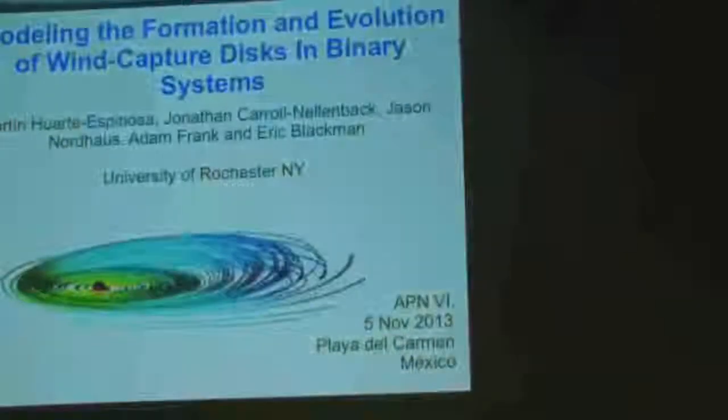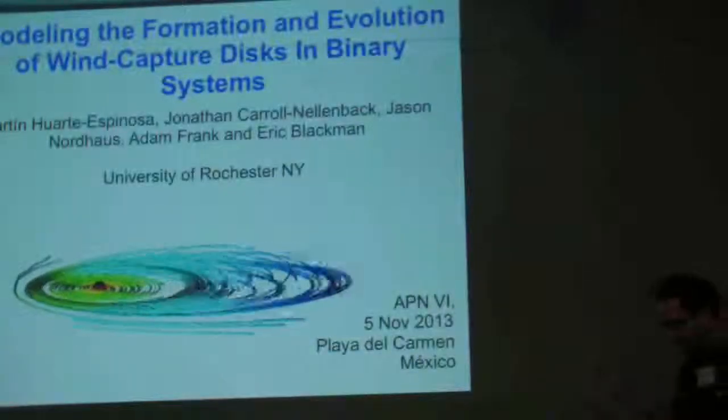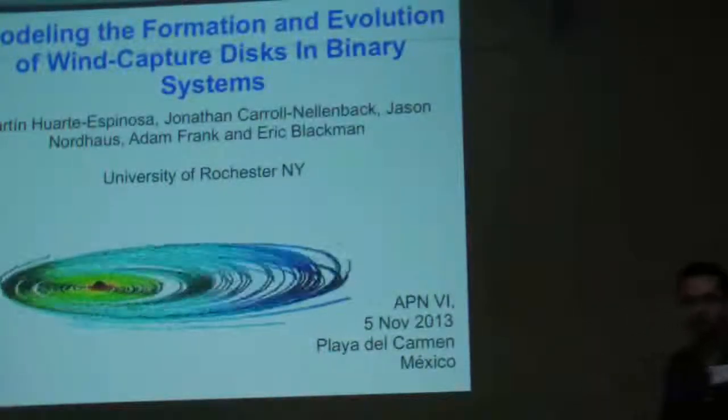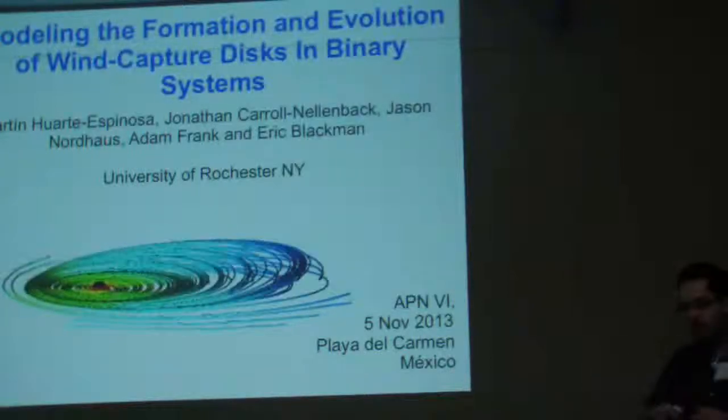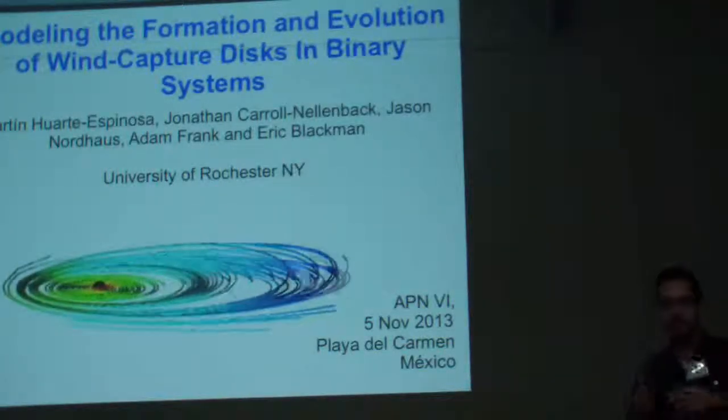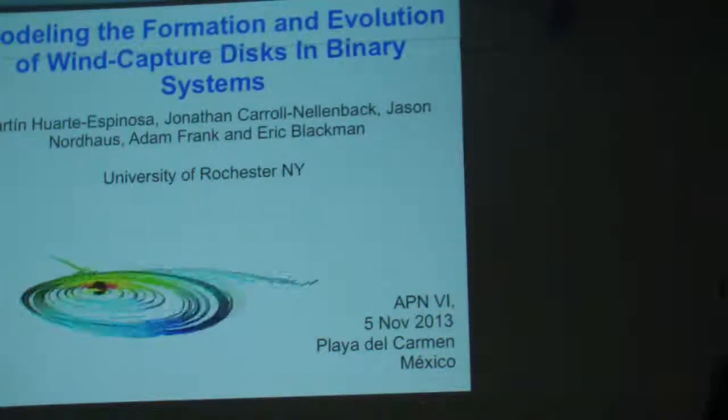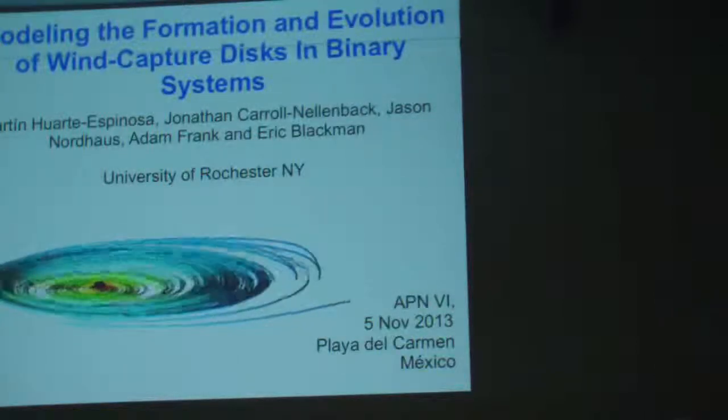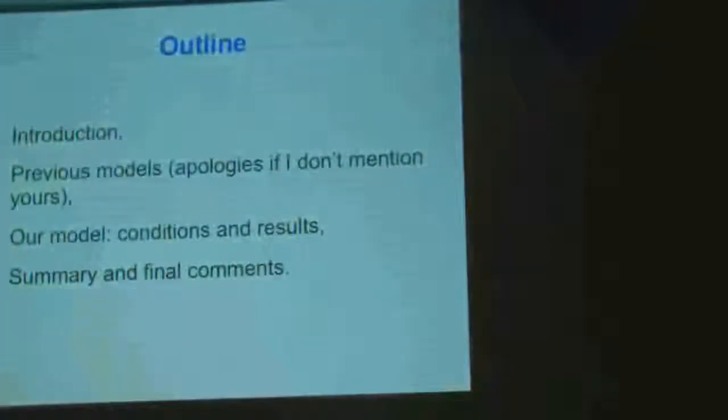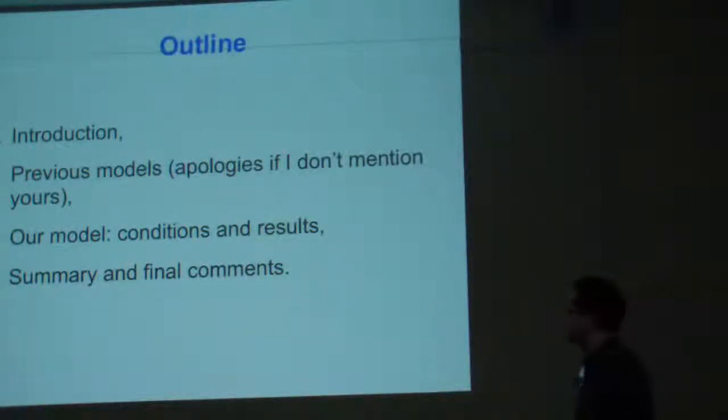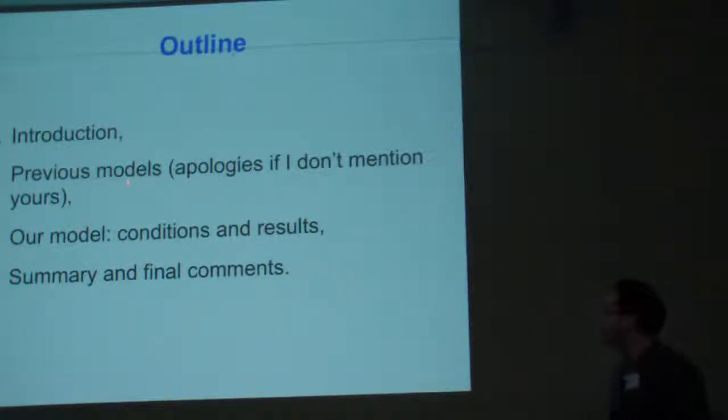And I want to be talking about this really pretty simulation showing the formation of a circumstellar disk. And this is what you see here, velocity lines that are going to be telling us about the structure of these disks. This is work in collaboration with the University of Rochester crew. Adam, Jason and Eric are here. And so the outline of my talk is very simple. I'm going to do a very brief introduction, then I'm going to tell you about a few models. I'm sorry if I don't mention yours, it's just because of time constraints. Then I'm going to tell you about our model, the conditions and results. And then some final comments.